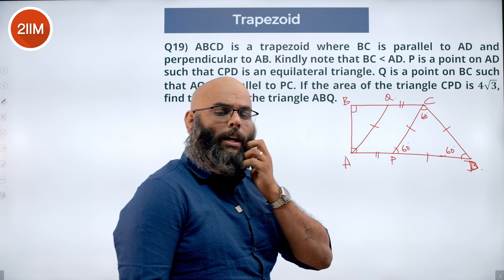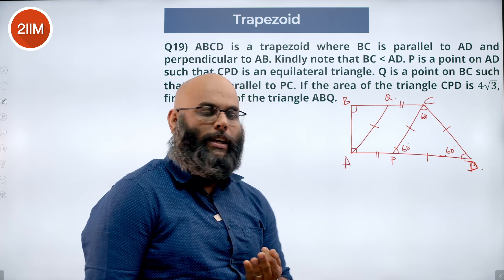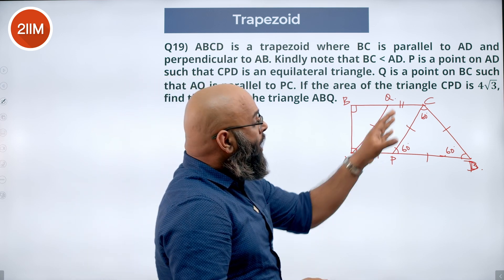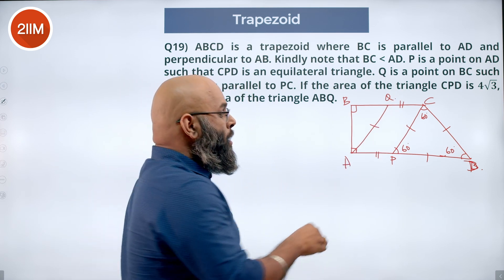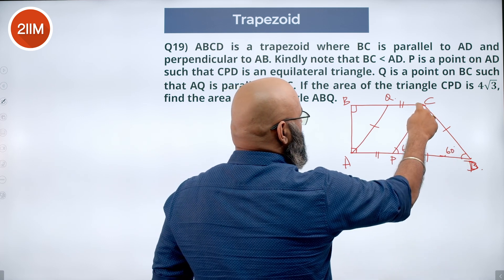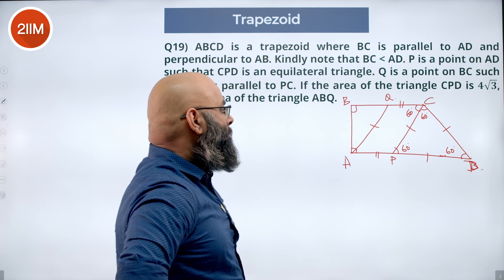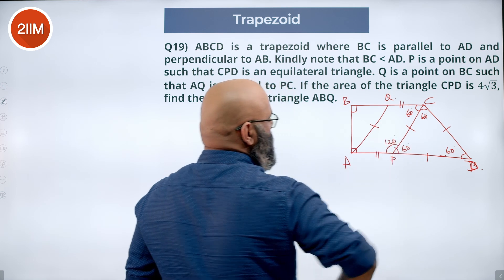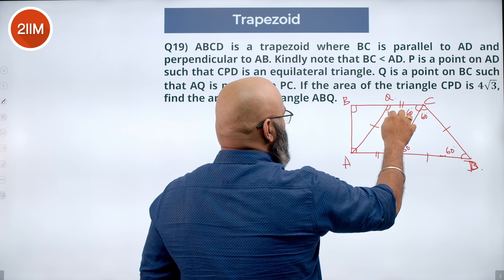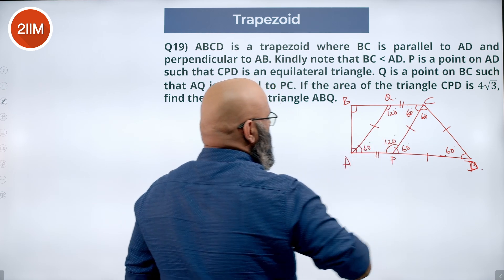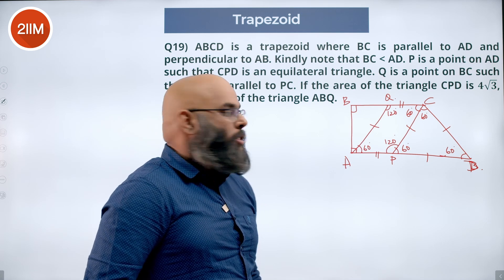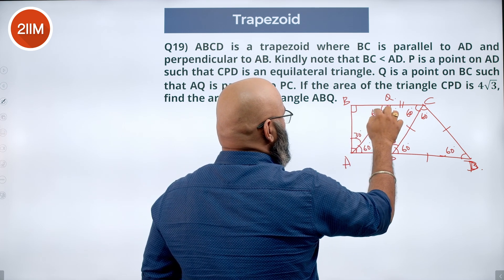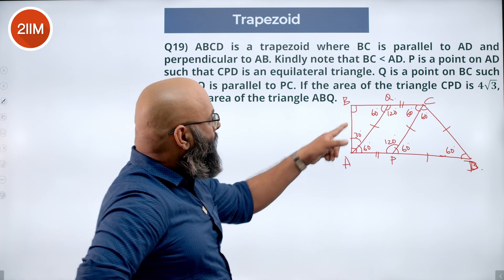ABCD is a quadrilateral, so the enclosed angles sum to 360°. We know angles at B and A are each 90°, and angle PCD (part of C) is 60°. So 90 + 90 + 60 = 240°, making the overall angle at C equal to 120°. Since PCD is 60°, angle QCP is also 60°. Since QCAP is a parallelogram, the angle at Q is 120° and at A is also 120°. The angle BAP is 90°, so angle BAQ is 30°.